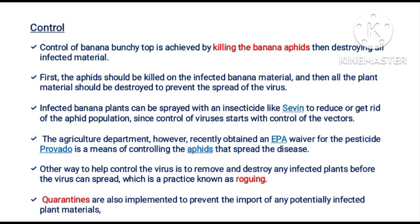The agriculture department recently obtained an EPA waiver. Pesticide application is a means of controlling the aphid that spreads the disease. Another way to help control the virus is to remove and destroy any infected plant before the virus can spread, which is a practice known as roguing. Quarantines are also implemented to prevent the import of any potentially infected plant materials. Thank you for watching.